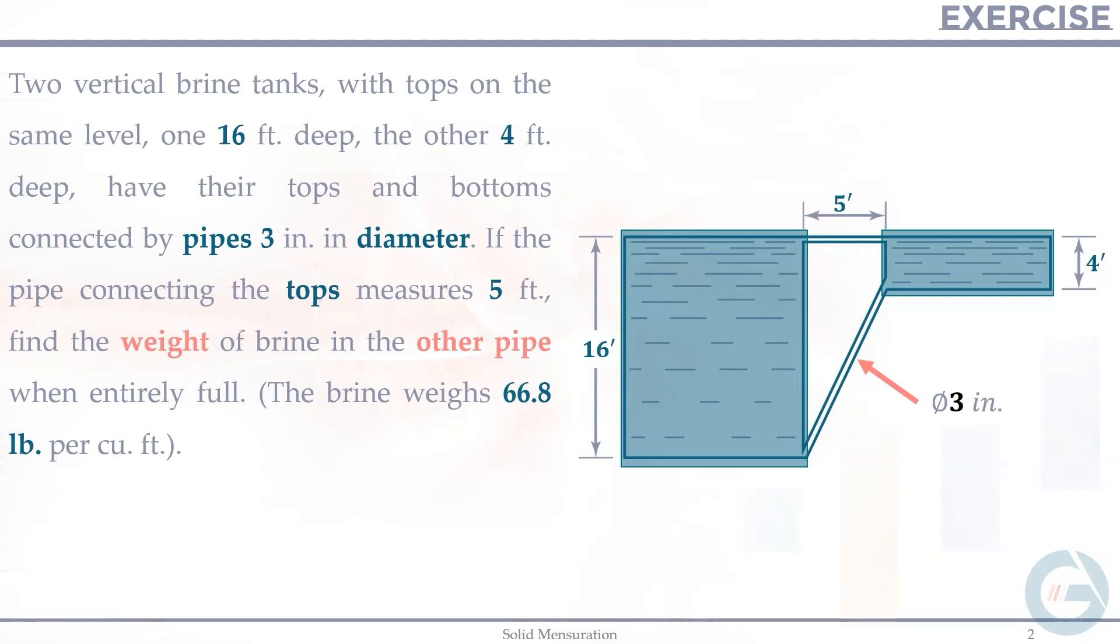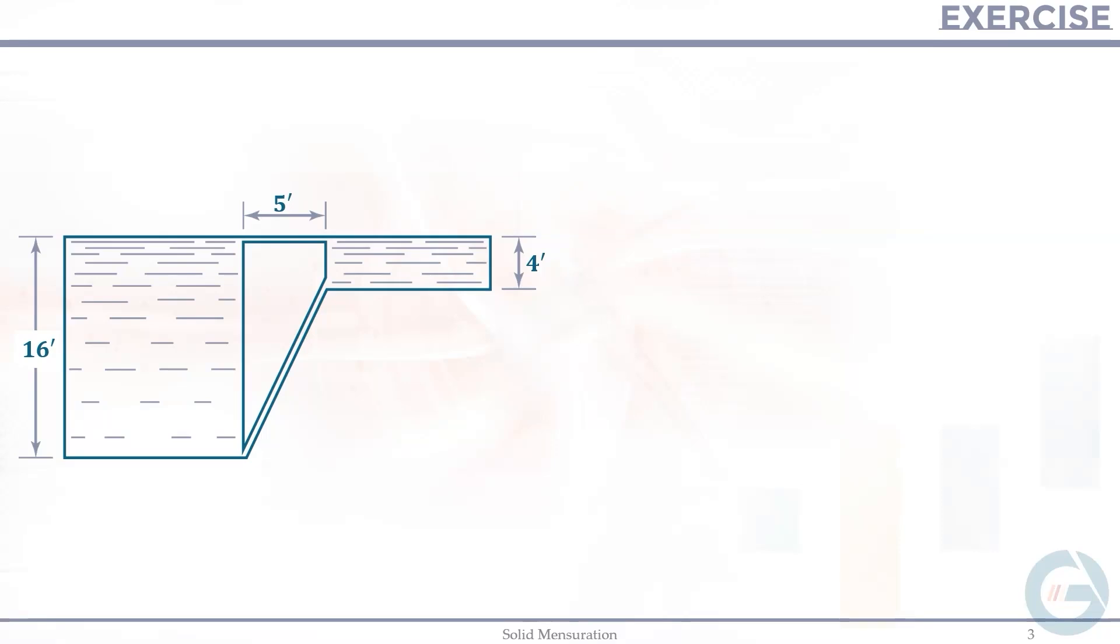First we need to find the length of this pipe simply by using the right triangle. So the first value of side we can have is, based on the figure, is this one. So if this is 5 feet, of course, this is also 5 feet. So that is the first value.